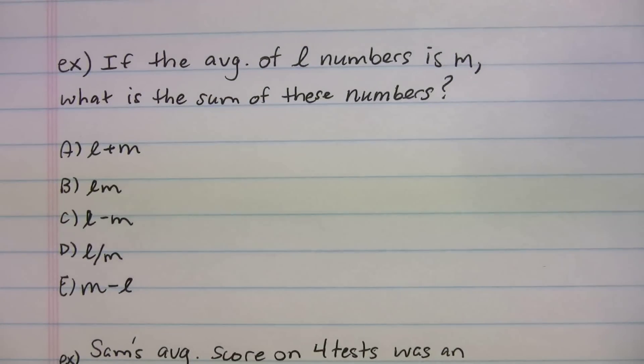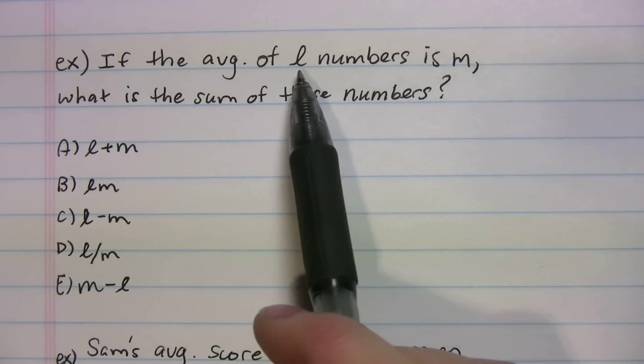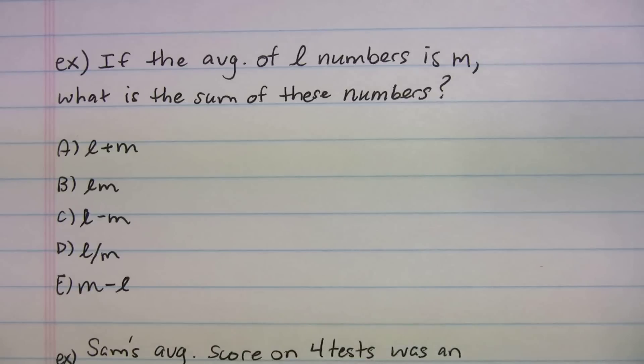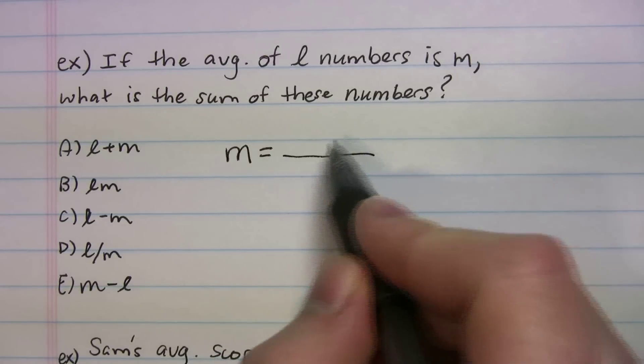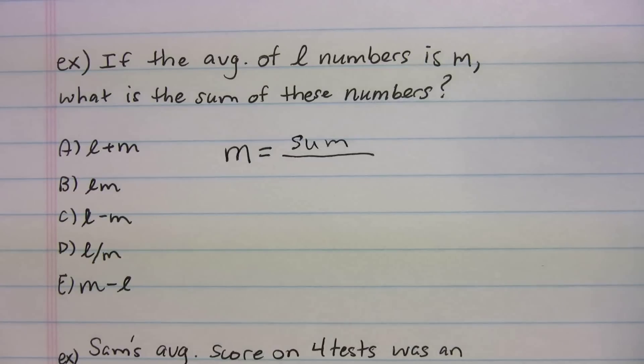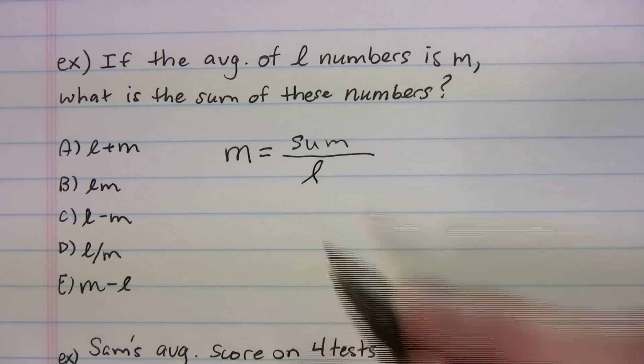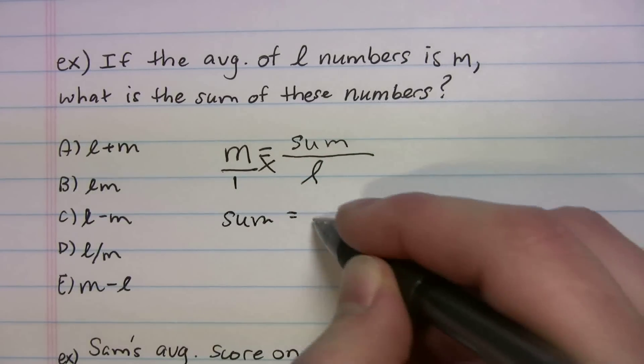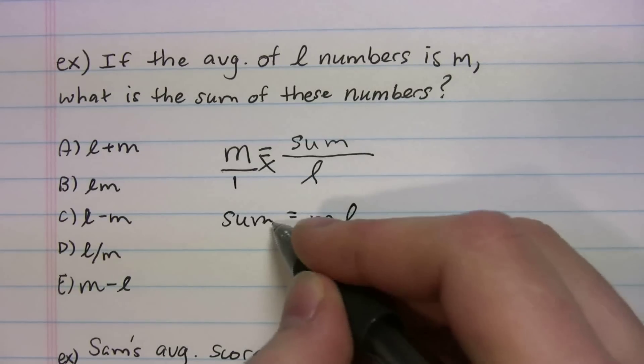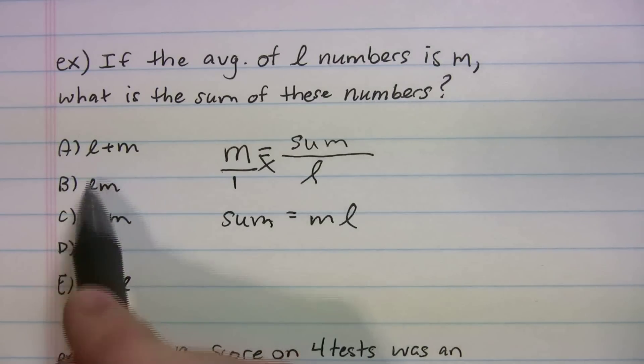Let's go to another one. This one says if the average of L numbers is m, what is the sum of these numbers? And what you can do is a nice tip. When you see variables, you can choose numbers for those variables. I'm not going to do that in this case. I'm just going to plug into the average formula. So it says the average of L numbers is m. So here's my average. That's equal to the sum, and I can just write sum in there. I'm adding all the things up. So that's the sum divided by, well, how many numbers do we have? It says L. We have L numbers. So now I can put that over one and cross multiply. So my sum is equal to m times L. And that's it. You're done. A nice algebraic way to get a problem or a more difficult problem done fast. So my sum is equal to ML. Choice B.